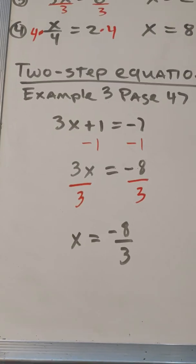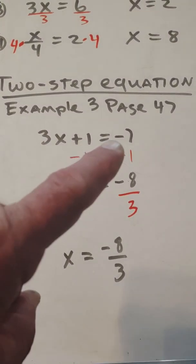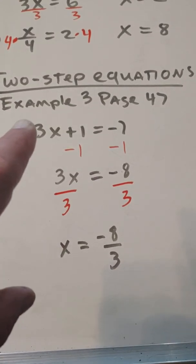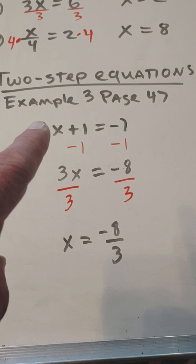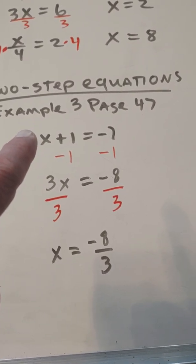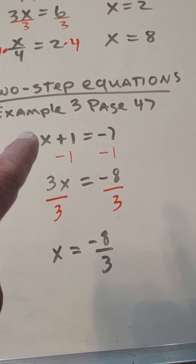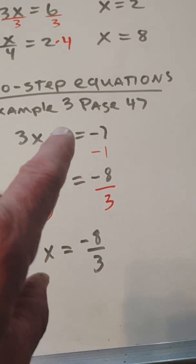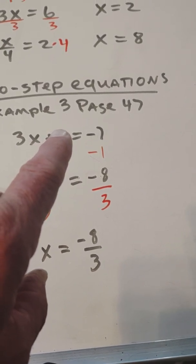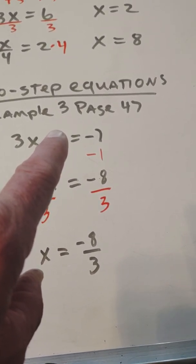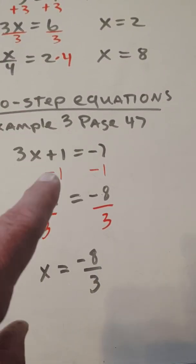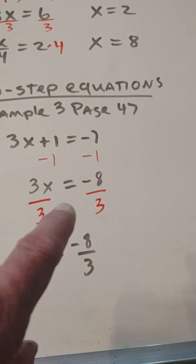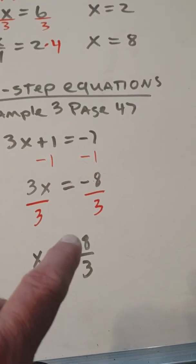Here's an example of two-step. This is example 3 on page 47. We have 3x plus 1 equals negative 7. See, if I block off this 3, you can see that I have x plus 1, which is one step. So, I'm going to subtract 1 from both sides, and I get 3x equals negative 8. If I were to block off this 1, you see I have 3x equals negative 7, which is the same thing. That's the reason it's called 2-step, because we have this step where we're subtracting 1, this step where we're dividing by 3, we get our answer of negative 8-thirds.